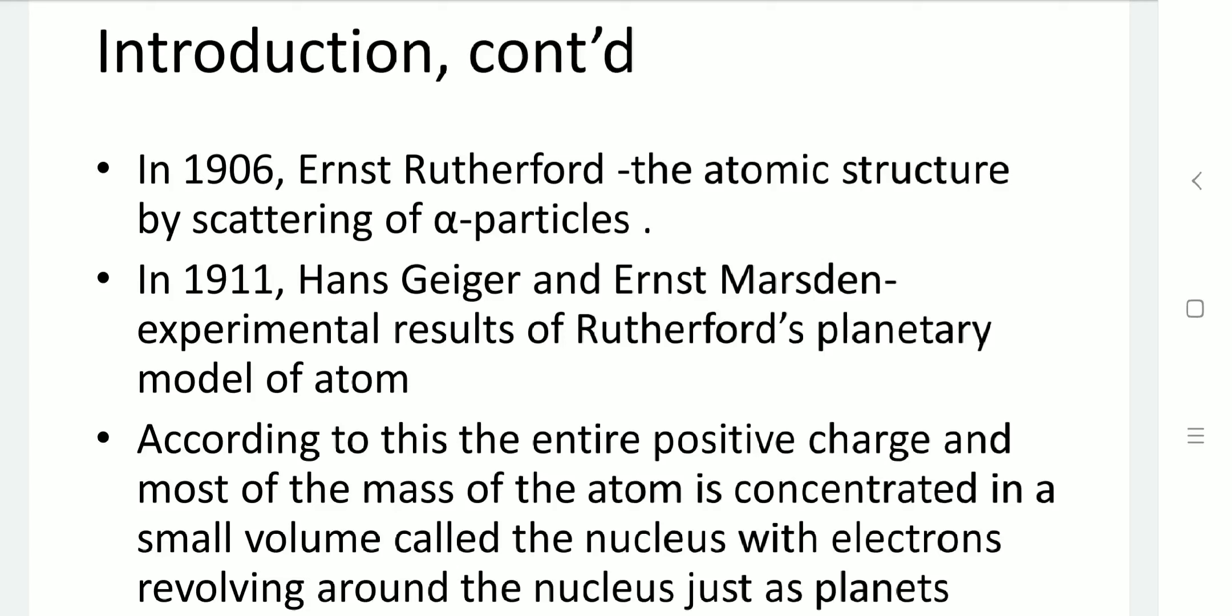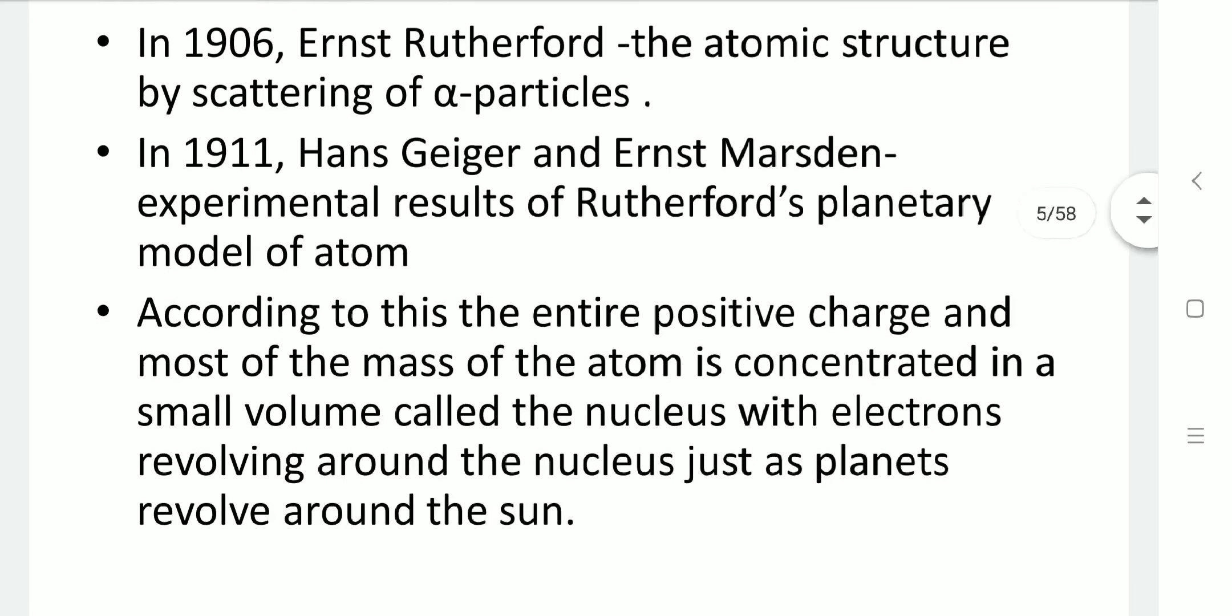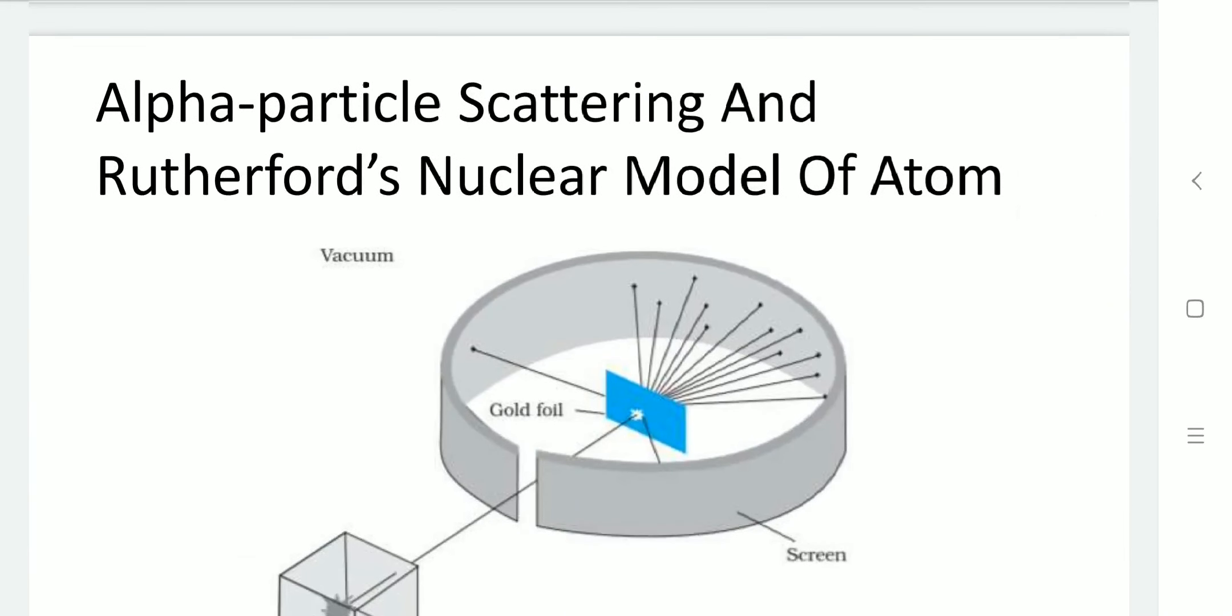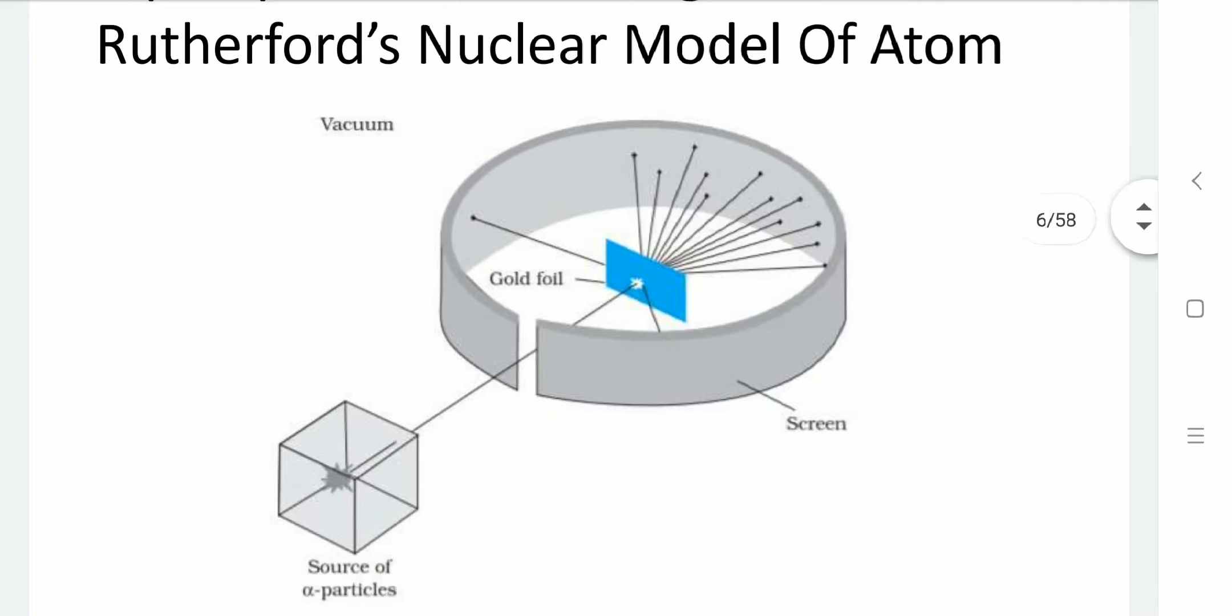According to this model, the positive charge is concentrated at the center, carrying most of the mass of the atom, concentrated in a very small volume known as the nucleus. Whatever amount of positive charges are concentrated in the nucleus, the same amount of negative charge carriers, electrons, are revolving around the nucleus, just like planets revolving around the sun. This is alpha particle scattering and Rutherford's nuclear model of atom.